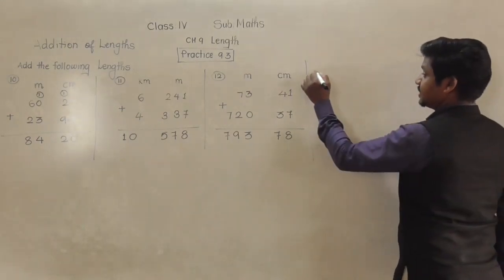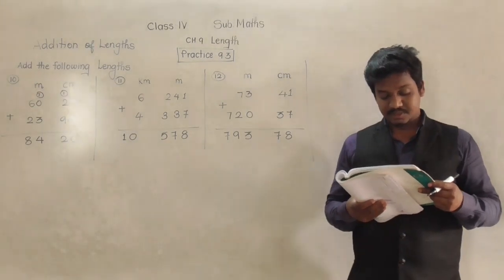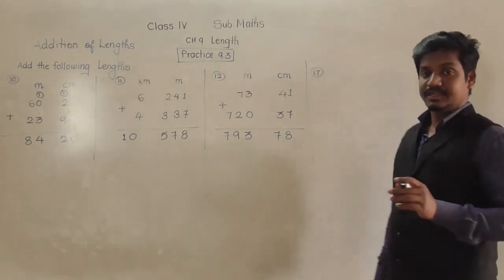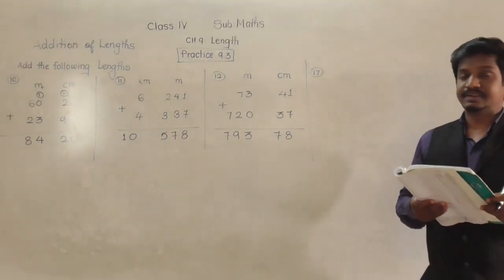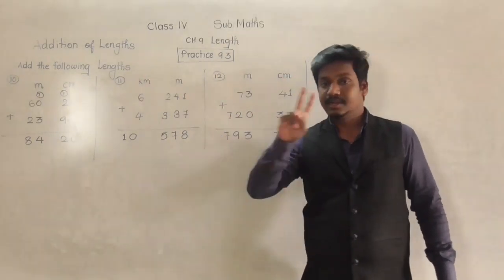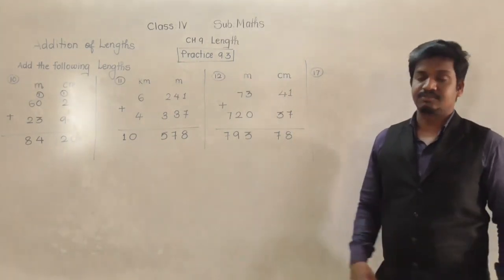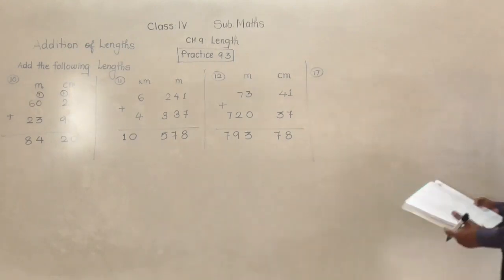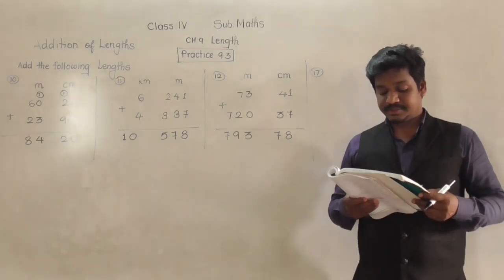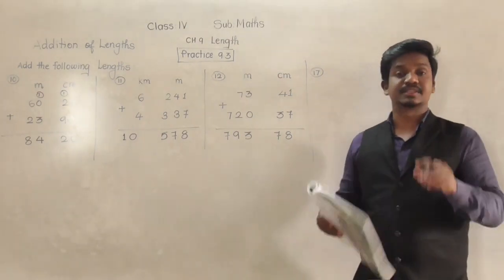It's very easy. After question 12, we will solve example number 17 — the remaining examples 13 to 16 you have to do by yourself. From questions 10 to 16 there are 2 lengths each, and we have done 3 examples of 2 lengths. Now in example number 17, 3 lengths are given: 23 meter 45 centimeter, then 35 meter 33 centimeter, and 25 meter 39 centimeter.